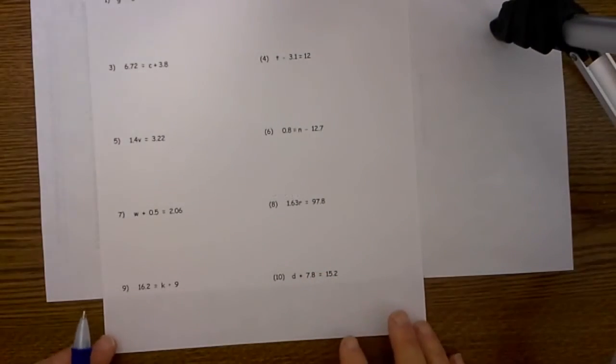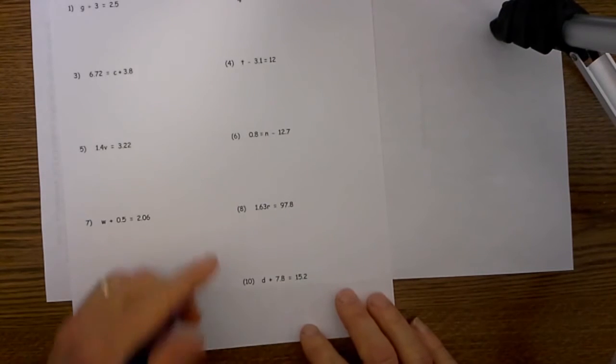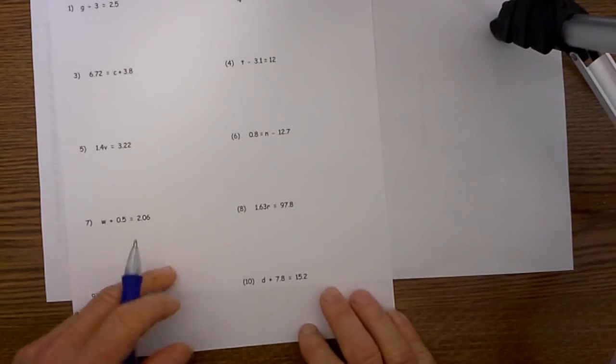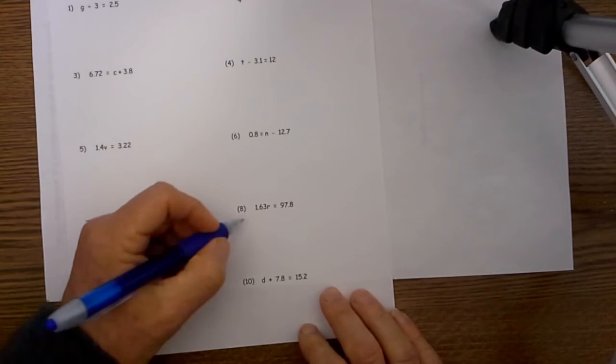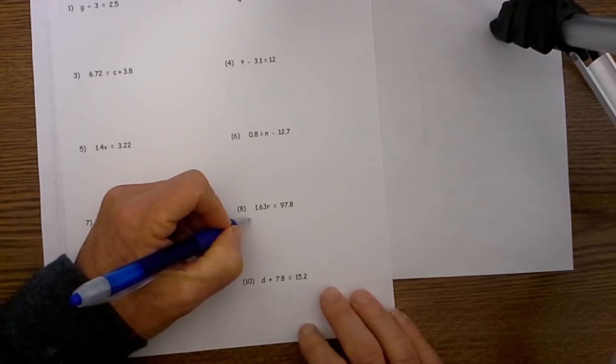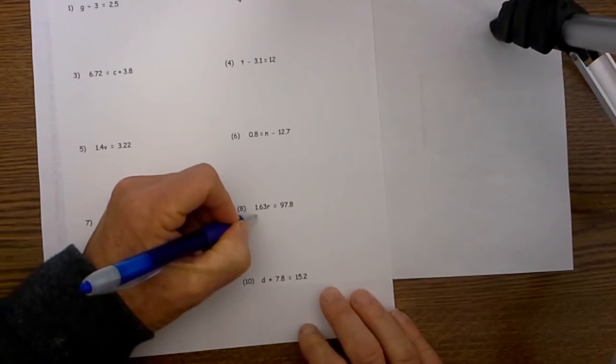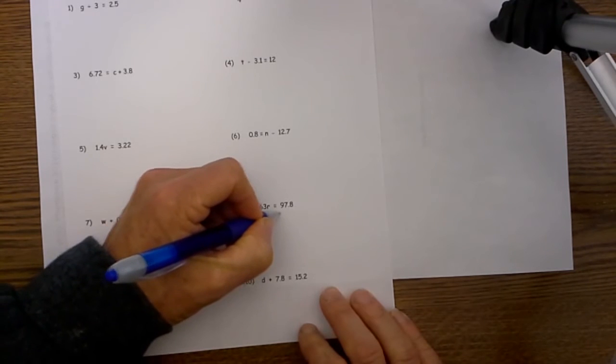Now let's get back to number 8, and on this one we have 16.3r equals 97.8. Well we know that this is a multiplication problem, and so in order to undo the multiplication we will divide by 1.63, and what we do to one side we must do to the other.